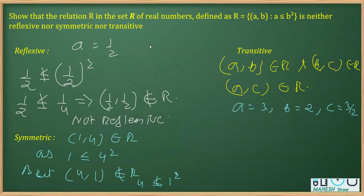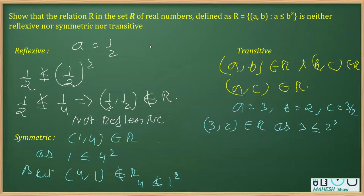First, let's show that (a, b) = (3, 2) belongs to R. We can see that 3 ≤ 2² = 4. Yes, 3 is less than or equal to 4, so (3, 2) belongs to R.